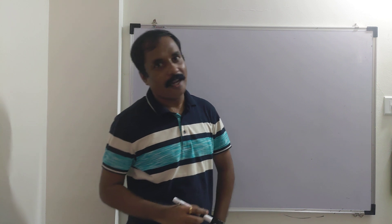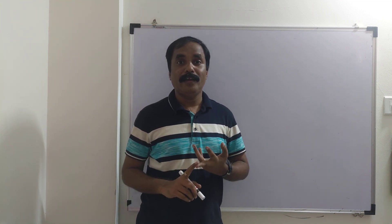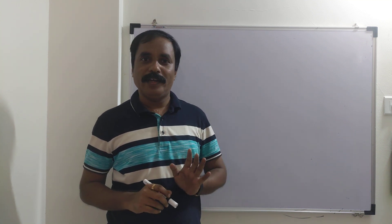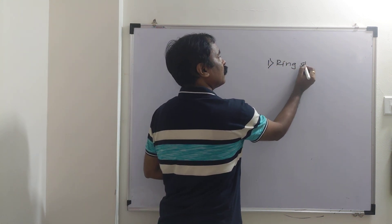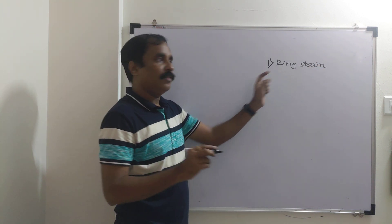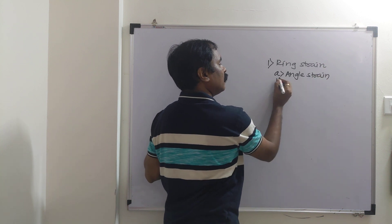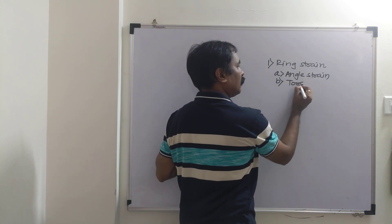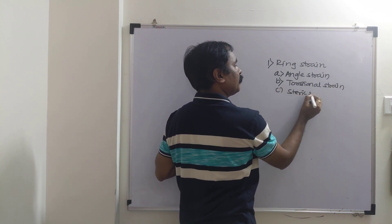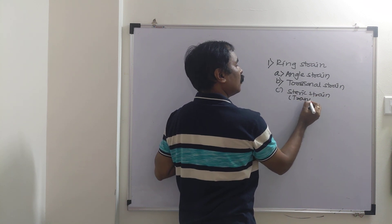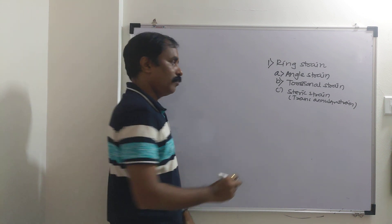Hello friends, today we will see the stability of cycloalkanes. Examples of cycloalkanes include cyclopropane, cyclobutane, cyclopentane, and cyclohexane. There are factors affecting the stability of cycloalkanes. Number one is ring strain, which accompanies angle strain, torsional strain, and third is steric strain — also known as trans-annular strain. The second factor is heat of combustion, that is enthalpy of combustion.